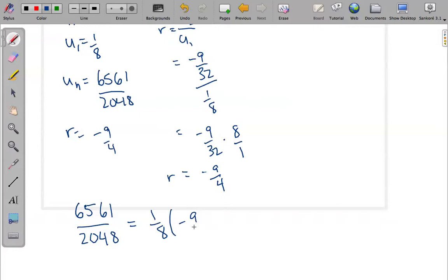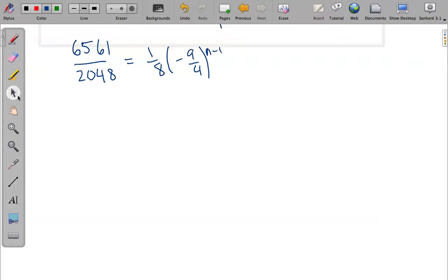...times r, which is -9/4, to the (n-1). I need to solve for this exponent. I've got several techniques available to me, but they're all going to deal with getting rid of this 1/8 first.